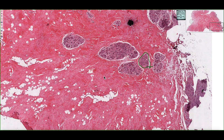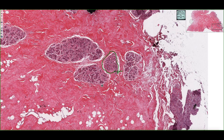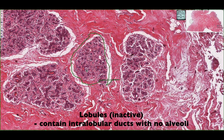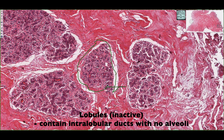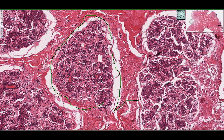We can also see these clusters of cells. These clusters are important because they are called lobules. Within each one of these lobules, we're actually going to find a series of ducts. In an active mammary gland, we'd see ducts as well as glandular tissue or acini. But since this is an inactive mammary gland, we actually only see just the ducts.